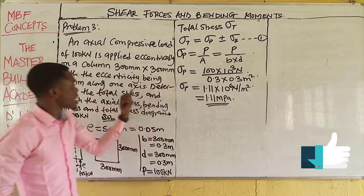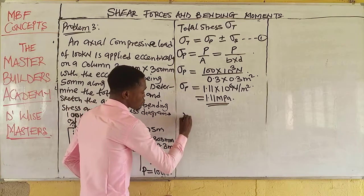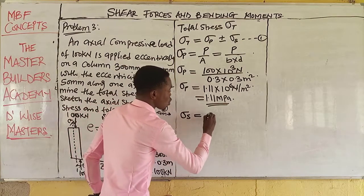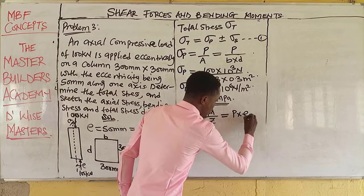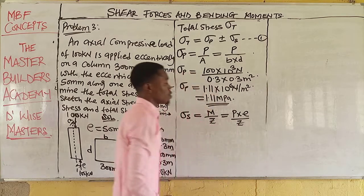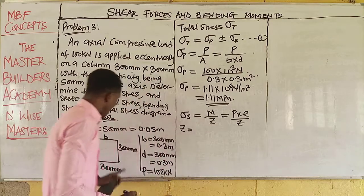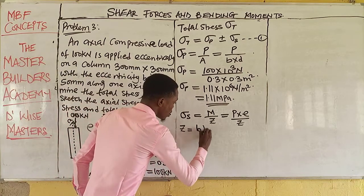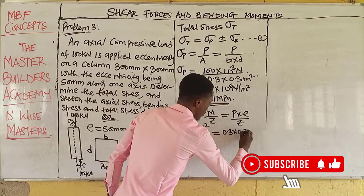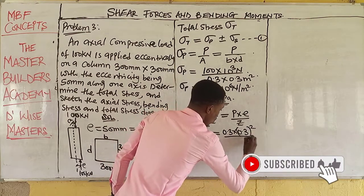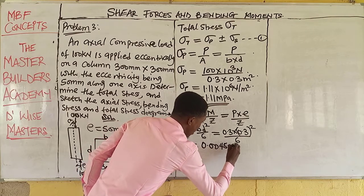To calculate the total stress, we also need the bending (secondary) stress. The secondary stress equals moment over section modulus, where moment equals the applied load multiplied by eccentricity. Let's calculate the section modulus: for a rectangular or square section, section modulus Z = BD²/6. This gives us 0.3 × (0.3)² / 6 = 0.0045 m³.